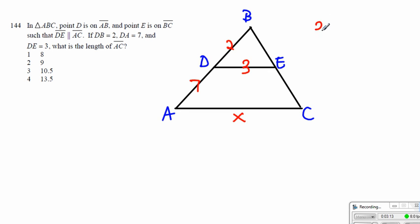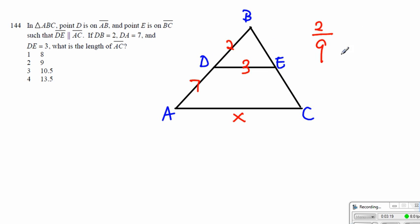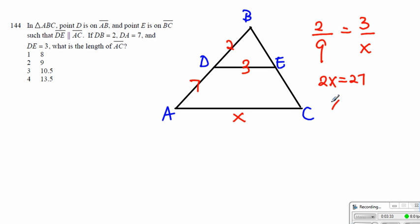Once again, we have to realize that 2 to 9 — the entire thing — is equal to 3, which is the small side of the smaller triangle, and the entire thing for the big triangle will be x. So what we can do is cross-multiply: we get 2x is equal to 27, where x equals 13.5.